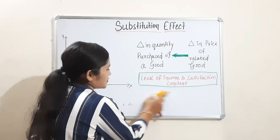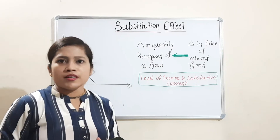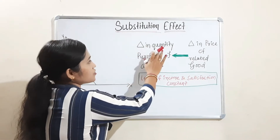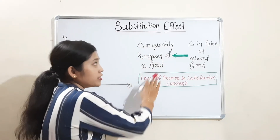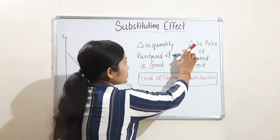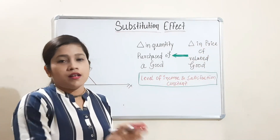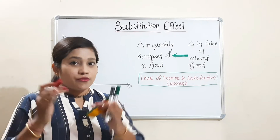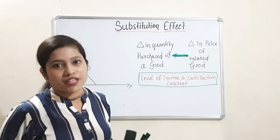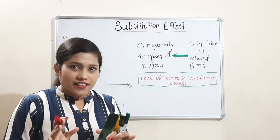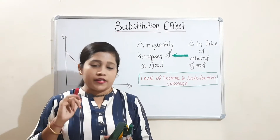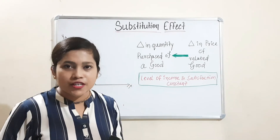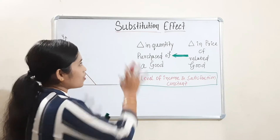So what do you mean by substitution effect? Substitution means change between related goods. The definition is: the change in quantity purchased of a good when there is a change in price of a related good. That means how much I will change purchasing tea when the price of coffee packets has been changed. That is called substitution effect.